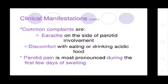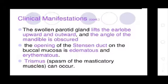Clinical manifestations: Common complaints are earache on the side of parotid involvement, and discomfort from eating or drinking acidic foods. The swelling of the parotid gland lifts the earlobe upward and outward and the angle of the mandible is obscured. The opening of the Stensen's duct to the buccal mucosa may be edematous and erythematous. Trismus from the masticatory muscles can occur.